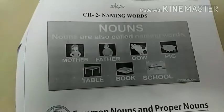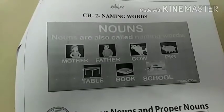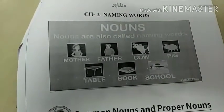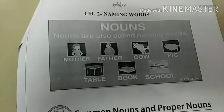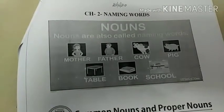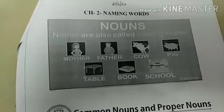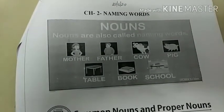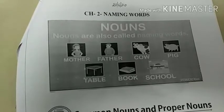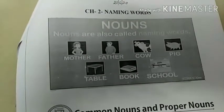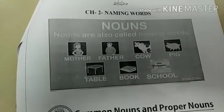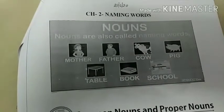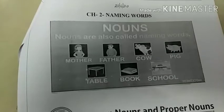The learning objective of this lesson is: at the end of this lesson, you will be able to learn and use the term noun to refer to naming words. You can also be able to classify a noun as the name of a person, place, animal or thing. That means you will be able to identify a noun in a given sentence.